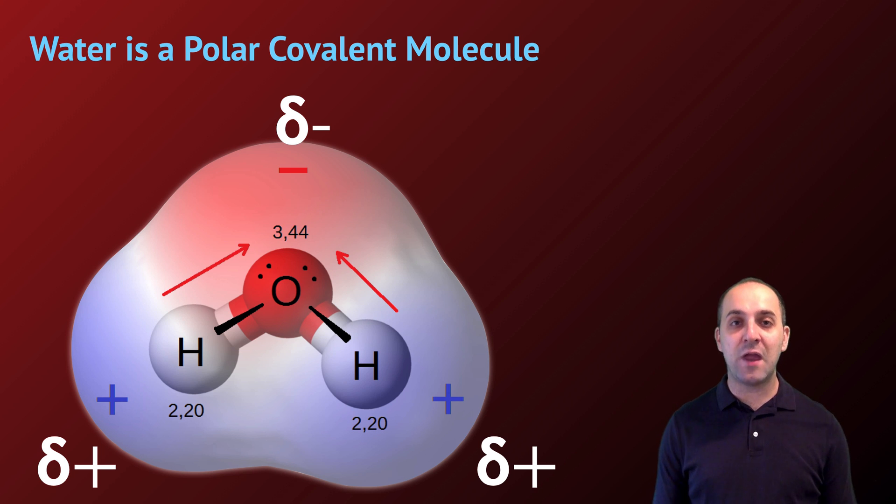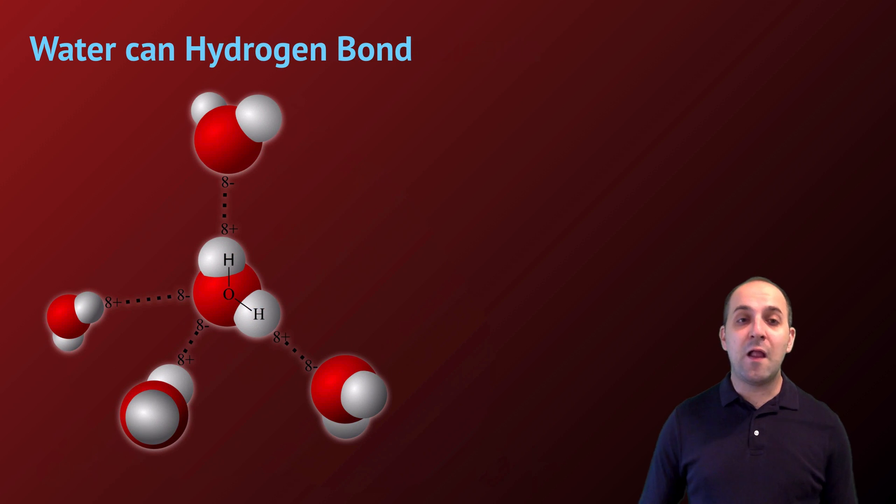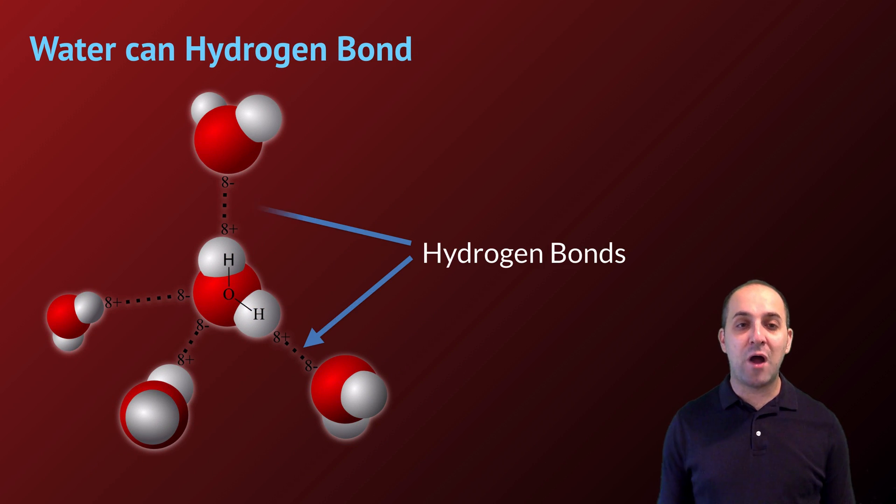This actually turns out to have a really important effect on the properties of water. Specifically, it allows water to engage in hydrogen bonding. It's typical to use dashed lines to indicate that hydrogen bonds are weaker than the forces holding atoms together in a water molecule. A hydrogen bond is an attraction between the partially positive ends of one water molecule and the partially negative ends of other water molecules. Each water molecule can engage in up to four hydrogen bonds.